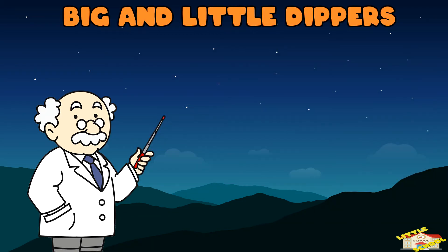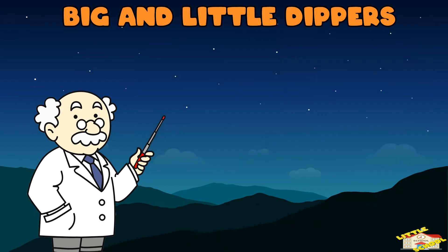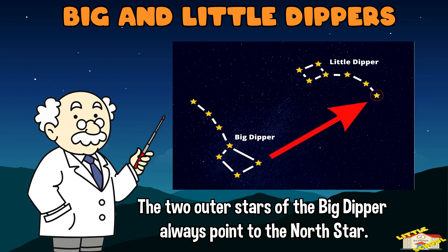Big and Little Dippers: the Big Dipper and Little Dipper are like celestial measuring cups. The two outer stars of the Big Dipper always point to the North Star.